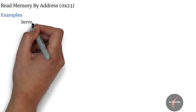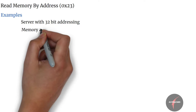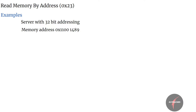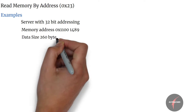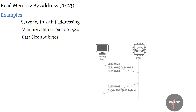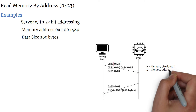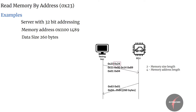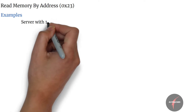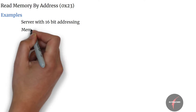Let's look into our first example. Consider a server with 32-bit addressing. Then to access data from memory address 0x11001489 of 260 bytes, the client request shall be as follows. In the request, the address and length format identifier shall be set to 0x24 — 2 for memory size length and 4 for memory address length. The server shall respond with data as follows.